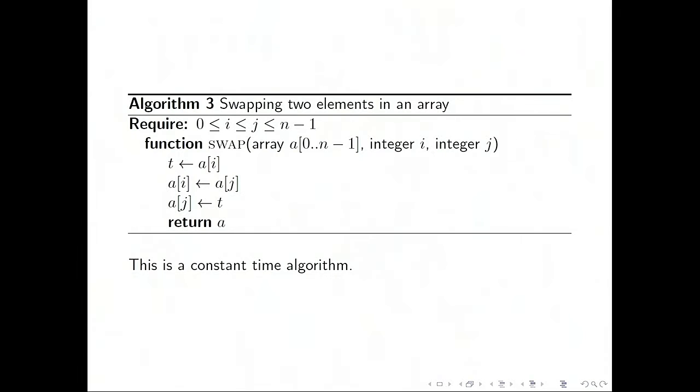So now I want to have a look at a few specific, very simple algorithms which we're going to use later on as building blocks, for example, for sorting algorithms. And we can get some practice analyzing these. This is an algorithm that takes an array with n elements and two indices i and j pointing into the array and swaps the elements at those positions. It creates a single temporary variable t, saves the old value of a of i, overwrites that with a of j, and finally a of j gets the old value of a of i. Each of the lines defining the function translate to a fixed number of elementary operations. And so this is called a constant time algorithm because the running time is independent of n, the input size.